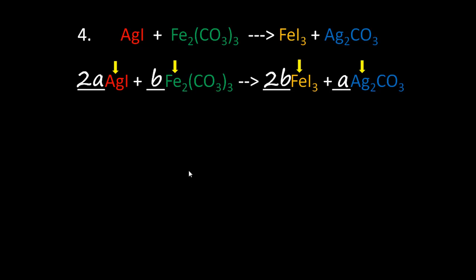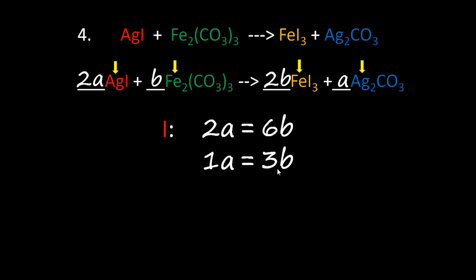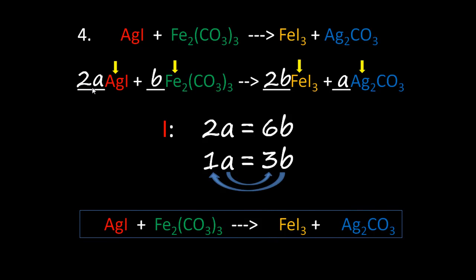We now write the equation for iodine since it is the simplest. We have 2a iodine atoms on one side and 3 times 2b equals 6b on the other. This is not the simplest equation, so we divide both sides by 2 to get 1a equals 3b. From this, a equals 3 and b equals 1. Substituting: 2 times 3 equals 6; since b equals 1, we write nothing there; then 2 times 1 equals 2; and a is 3. The chemical equation is balanced.